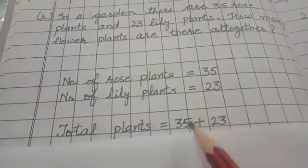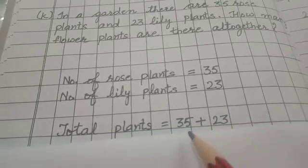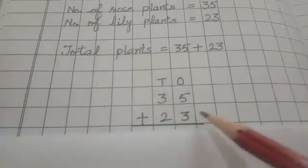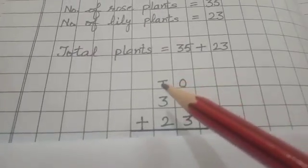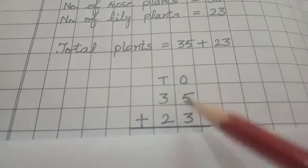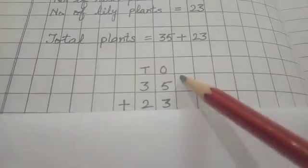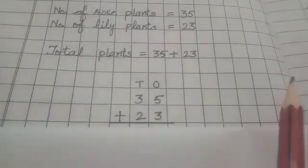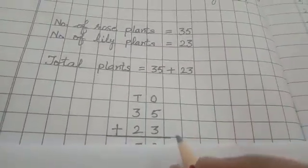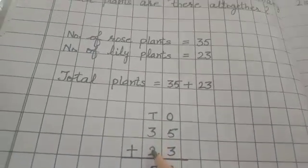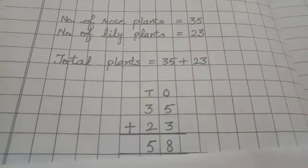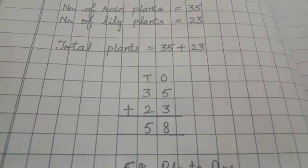Total plants equals 35 plus 23. Now, we will add 35 and 23. We will write places: Tens (T) and Ones (O). First, we will add digits under the 1s place: 5 plus 3 equals 8. And then 3 plus 2 equals 5. So, your answer is 58 plants.